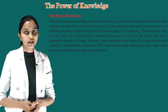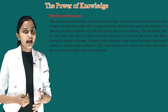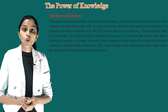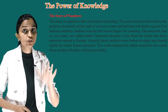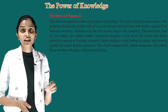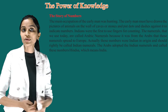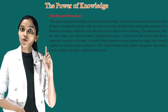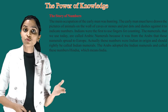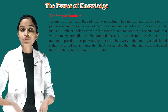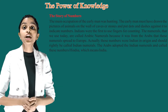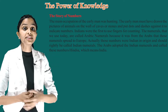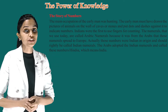The story of numbers — the main occupation of early man was hunting. The early man must have drawn pictures of animals on the walls of caves or stones and put dots and dashes against them to indicate numbers. Indians were the first to use fingers for counting.